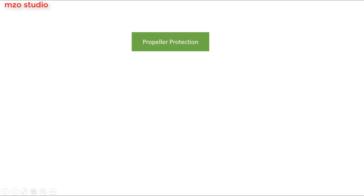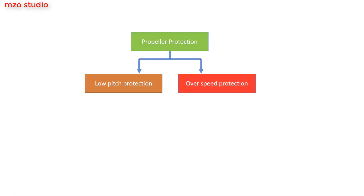The propeller protection system has two types of protection: low pitch protection and overspeed protection.